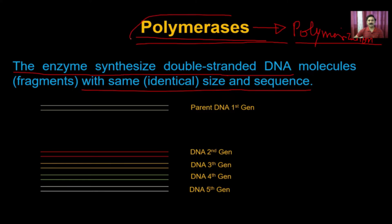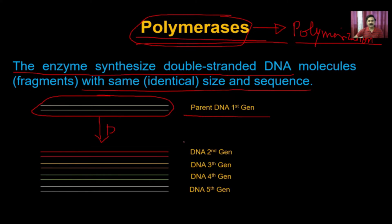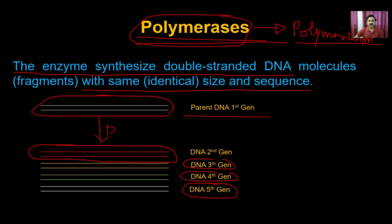Polymerases are used to synthesize genomic DNA. If you have a parent DNA and apply DNA polymerase, it makes another copy of that parent DNA, generating DNA for the second, third, fourth, and fifth generation. It is important that polymerases synthesize DNA identical in size and sequence to the parent, because any change in size or sequence will generate mutations.